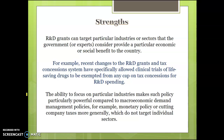In terms of strengths, one particular strength is the ability of research and development to target particular sectors or industries that will provide a social benefit for the country. Recent changes to research and development grants and tax concessions allow, for example, clinical trials of life-saving drugs to be exempted from any cap on tax concessions. They put limits on tax concessions, but not for something related to clinical trials for life-saving drugs, allowing them to target particular sectors that are going to have benefits for society.